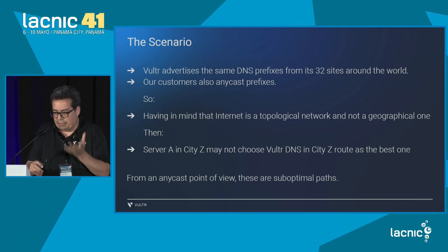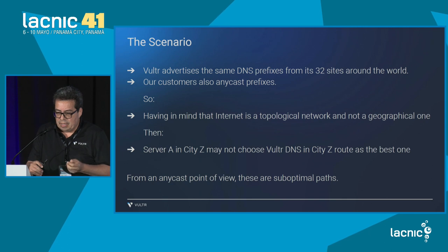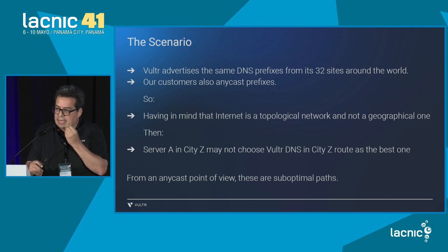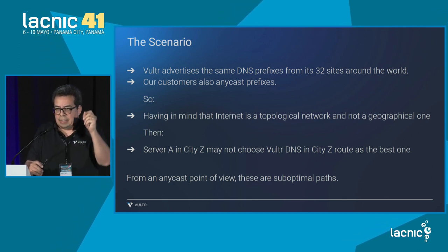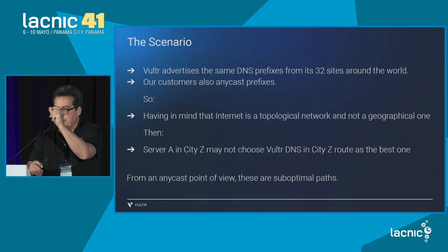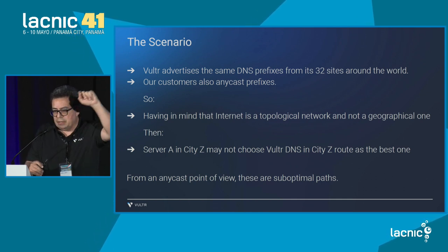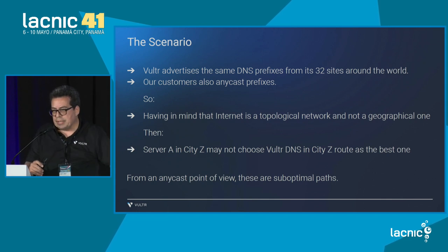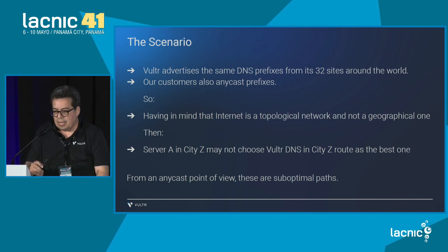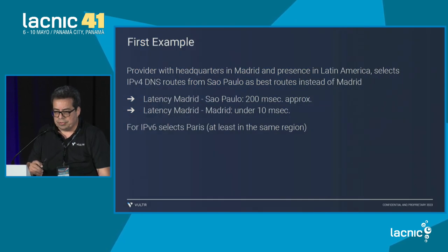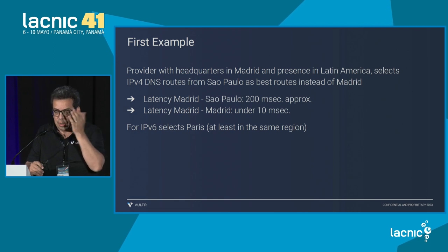Considering that the internet is topological rather than geographical, maybe from city A, which is 10 kilometers from city B, that anycast prefix is actually taking a route that goes around to reach that site. We consider this to be a suboptimal path.